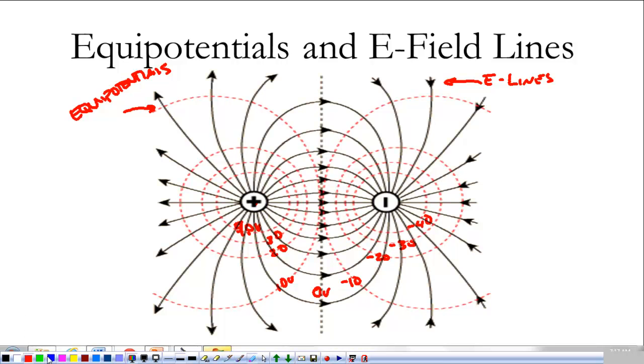So, some of the things we notice is that we have high potential around or close to high potential around positive charges. Low potential around negative charges. That's just how the potentials move.